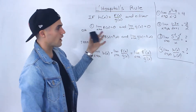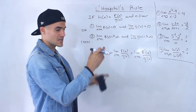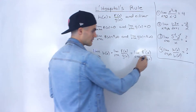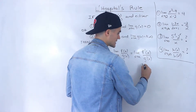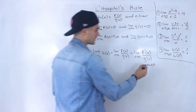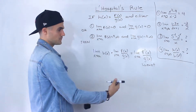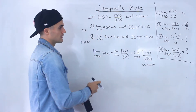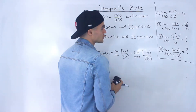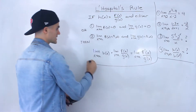Now, certain professors and certain textbooks may have a different definition. Some definitions may be more technical, like they might write that this limit has to exist, or that the limit as x approaches a of g'(x) cannot equal 0. You'll need to adjust accordingly. But this is basically it, and I'm going to show you how it works with all four of these limits.